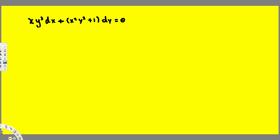What's going on guys? In this video we are going to see what if we have an exact differential equation pattern but it's not exact. How do we solve this one?